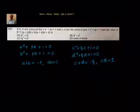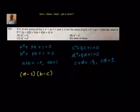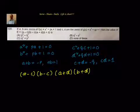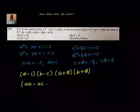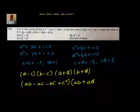This is the information available to us, and we will be leveraging all these conditions to solve the problem. We need to compute (a − c)(b − c)(a + d)(b + d). We take (a − c)(b − c) as one unit and multiply them: a·b − a·c − b·c + c² . And when we multiply (a + d)(b + d), we get a·b + a·d + b·d + d².